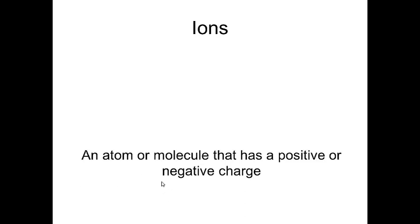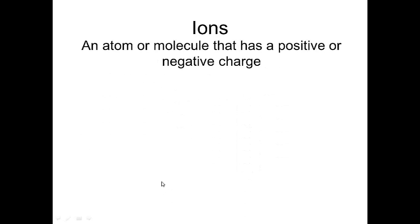So sometimes when we do bonding, we end up with special kinds of molecules called ions. So an atom or a molecule that ends up having a positive or a negative charge is the definition of an ion. And this will happen because of a gaining or loss of electrons.